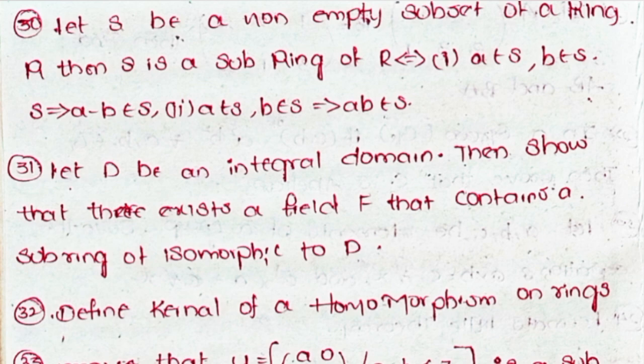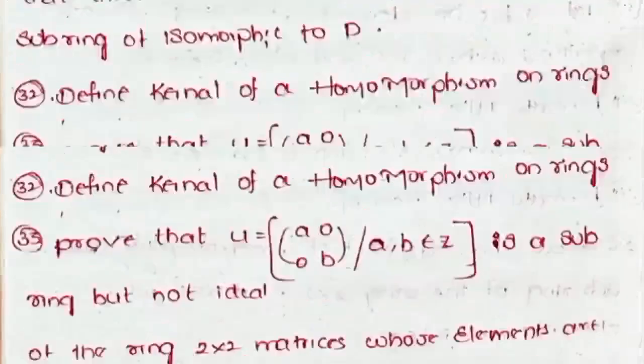Thirty-one, let D be an integral domain, then show that there exists a field F that contains a subring isomorphic to D. Thirty-two, define the kernel of a ring homomorphism. Thirty-three, prove that U = {[a, 0; 0, b] | a, b belonging to Z} is a subring but not an ideal of the ring of 2×2 matrices whose elements are integers.